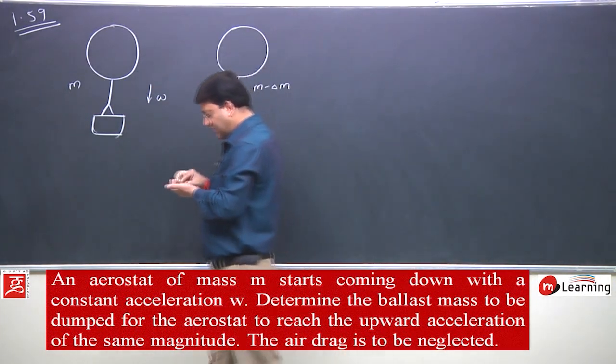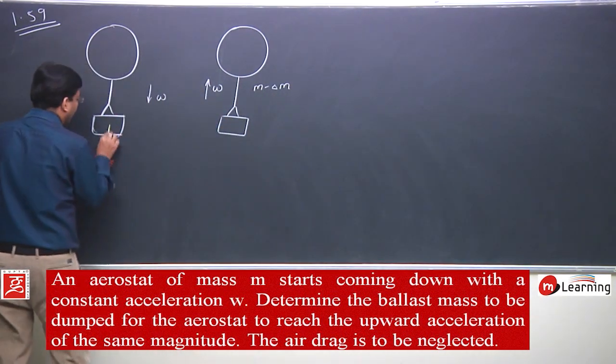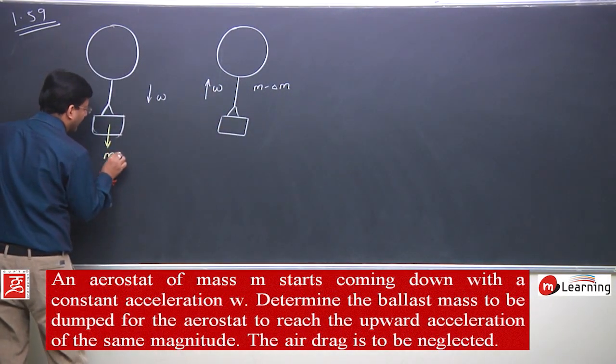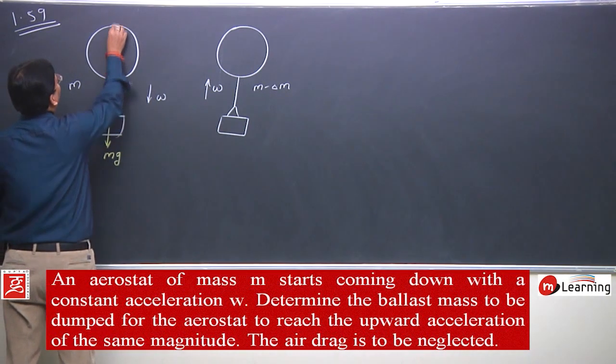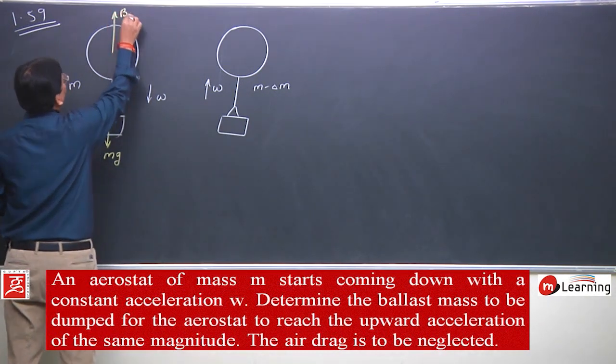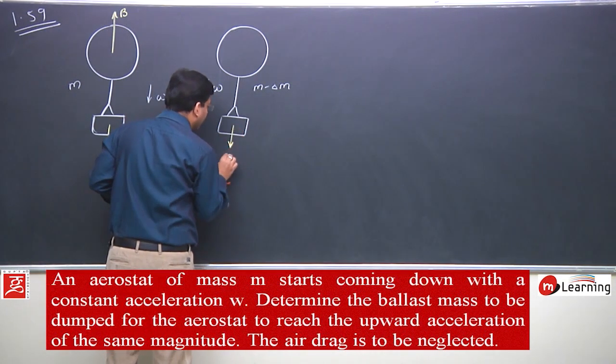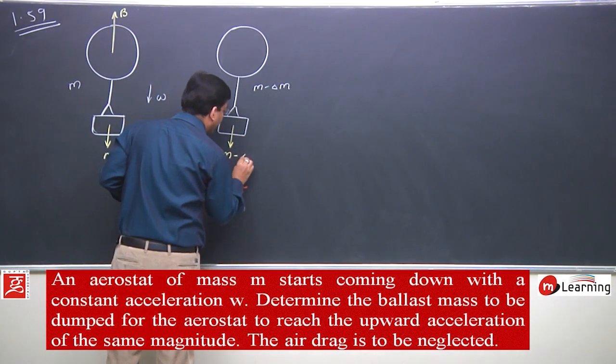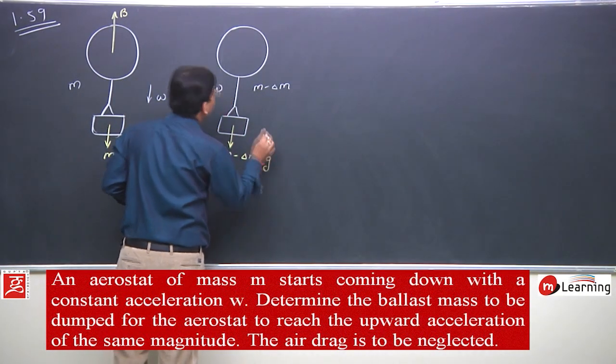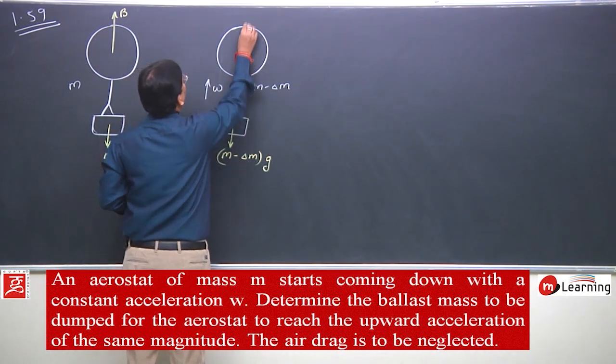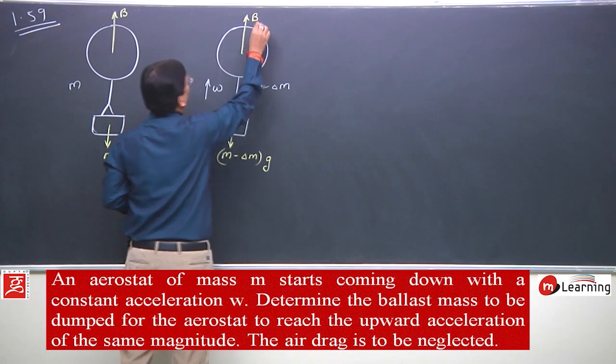Look here. First, there would be a gravitational force mg and buoyant force b. In the second case, the gravitational force is (m - delta m)g. The buoyant force, being due to the balloon, remains constant.